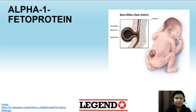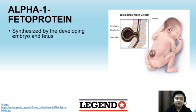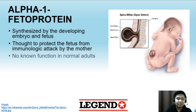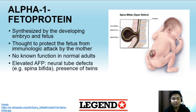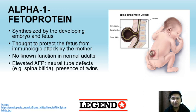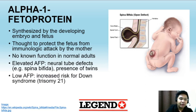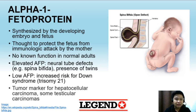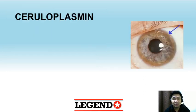The next protein is alpha-fetoprotein. It is synthesized by the developing embryo and fetus and is thought to protect the fetus from immunologic attack by the mother. In adults, it has no known function. Alpha-fetoprotein can be measured to screen for neural tube defects like spina bifida and may be elevated in the presence of twins. Low AFP is seen in Down syndrome or trisomy 21. In adults, alpha-fetoprotein is a tumor marker for hepatocellular carcinoma or testicular carcinomas.